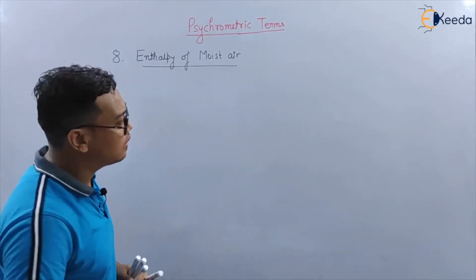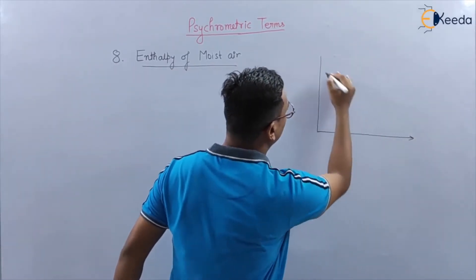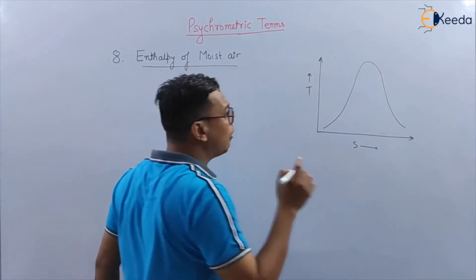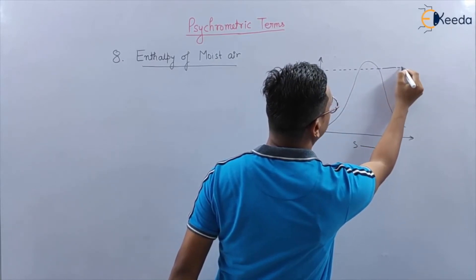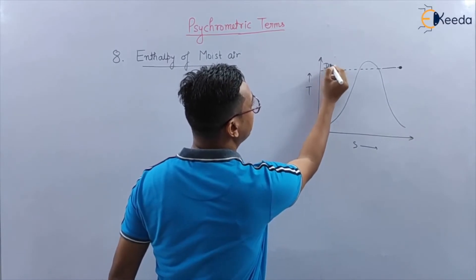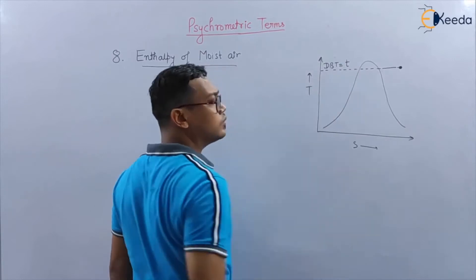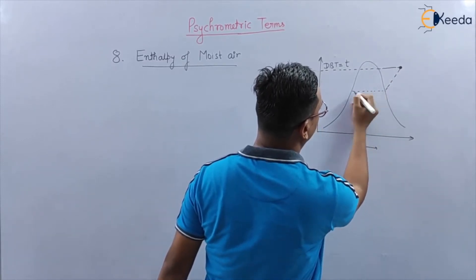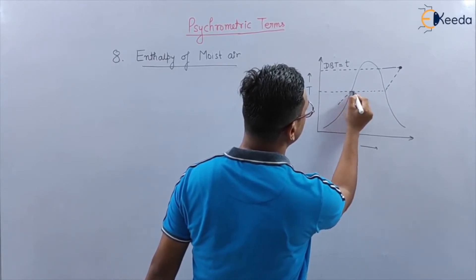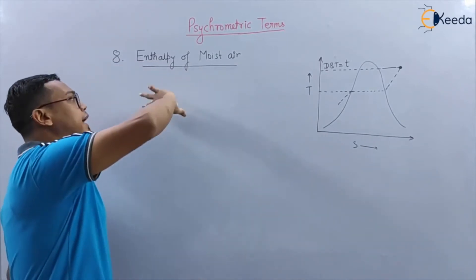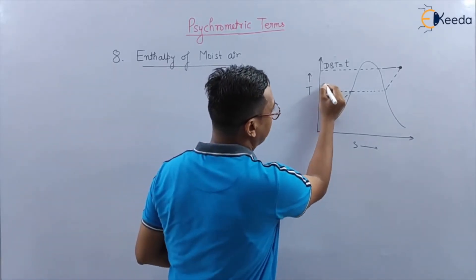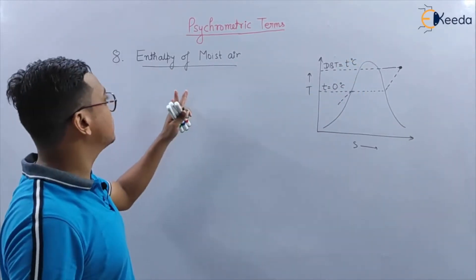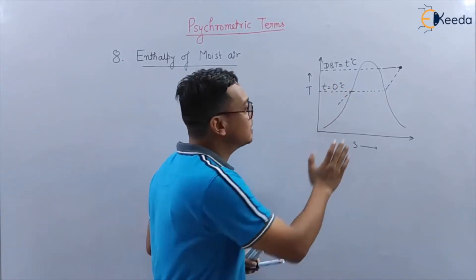What is the enthalpy of moist air? I have already shown the T-S curve for water vapor, where the air is at a particular point. At that point, the temperature is the saturation temperature. If I draw a constant pressure line, this gives the saturation temperature. To calculate the enthalpy of moist air, I take the saturation temperature as zero — the reference point is zero at this condition.